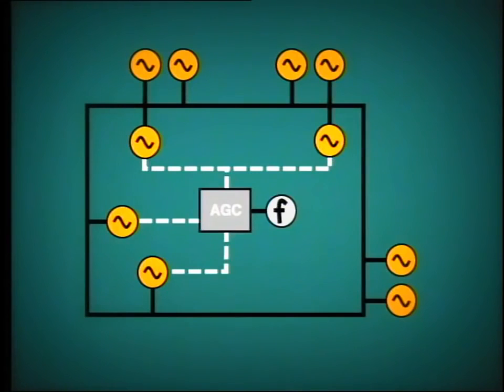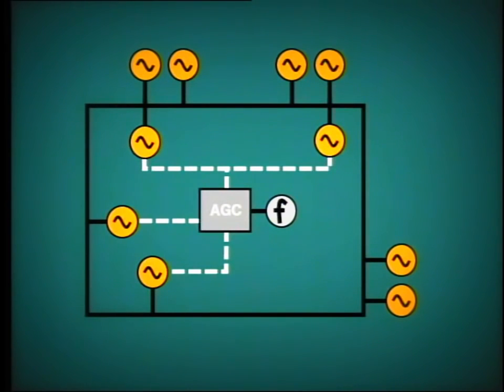Usually, certain generators on the system are selected to operate as regulating units, receiving immediate signals from the AGC system to correct frequency. The objective of the speed droop setting is to ensure stable operation of generators which are connected in parallel on the power system.